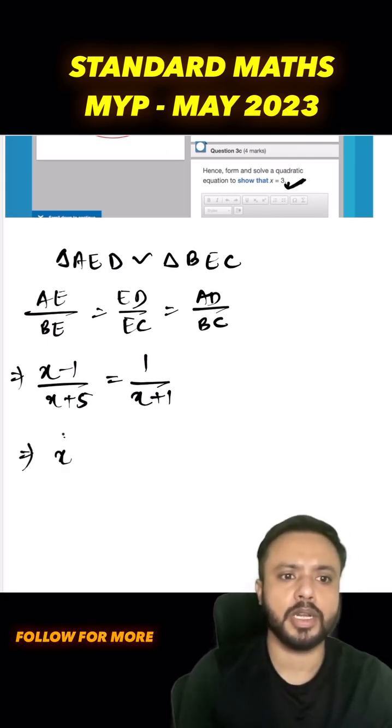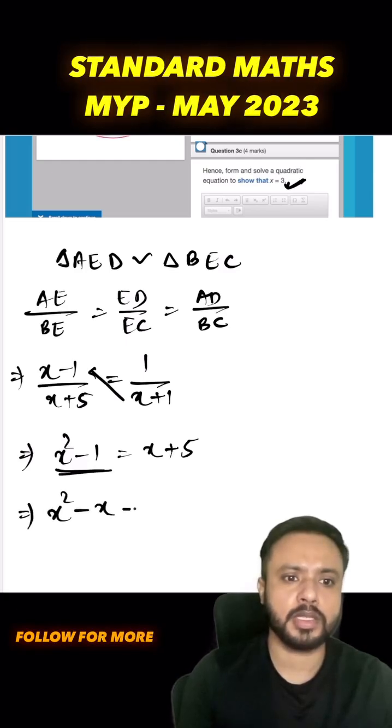We will cross multiply, so I will get x squared minus 1 equals x plus 5. When I transfer this to the side, I can use the identity a plus b into a minus b which is a squared minus b squared. Hence I can write it as x squared minus x minus 6 is equal to 0.